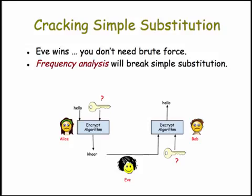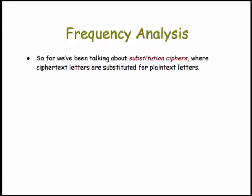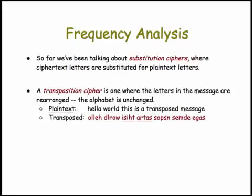So you can break simple substitution cipher using frequency analysis. That makes Eve happy, and Alice and Bob are not very happy about that. So far, we've just looked at substitution ciphers, where you create cipher text by substituting a letter from the cipher alphabet for a letter from the plain alphabet. There's another type of encryption known as transposition — in that case, you don't substitute letters, you just rearrange the letters in the original message, and there are lots of rearrangements.